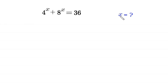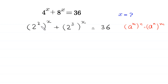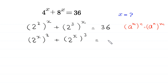So let's start. This 4 to the power x can be written as 2 squared, whole to the power x, plus this 8 to the power x can be written as 2 cubed, whole to the power x, is equal to 36. By using the property (a^m)^n = a^(n·m), this 2 squared whole to the power x becomes 2 to the power x, whole to the power 2, plus 2 cubed whole to the power x becomes 2 to the power x, whole to the power 3, is equal to 36.